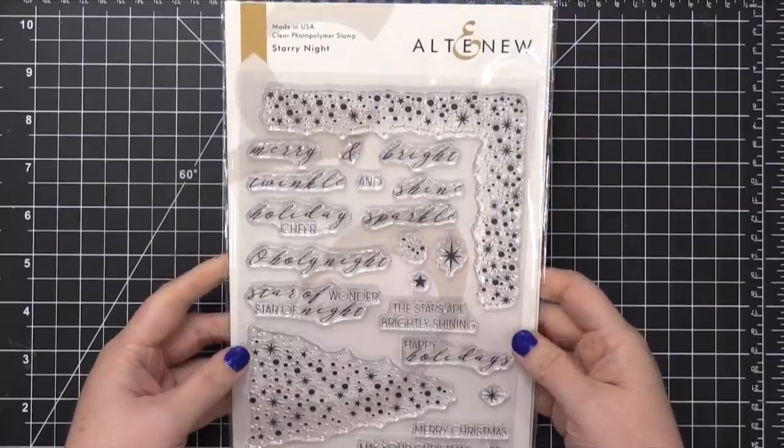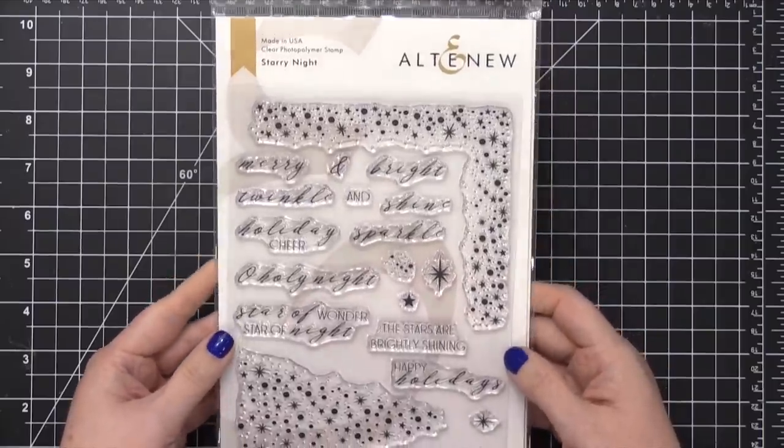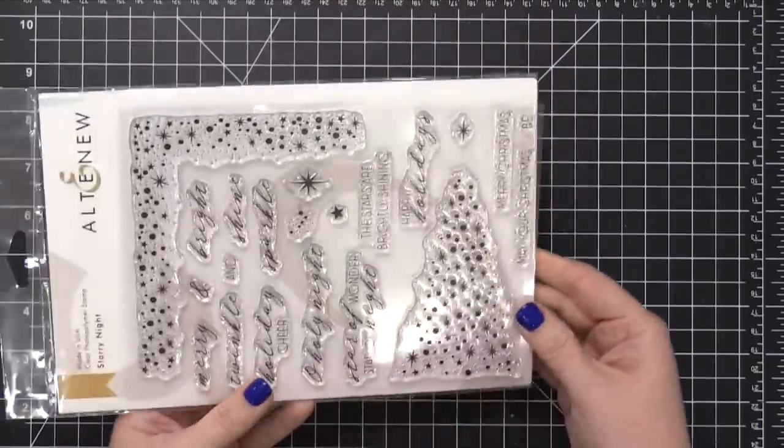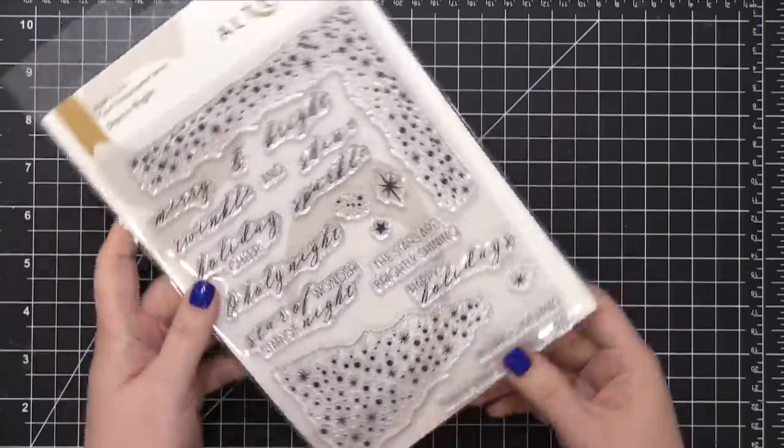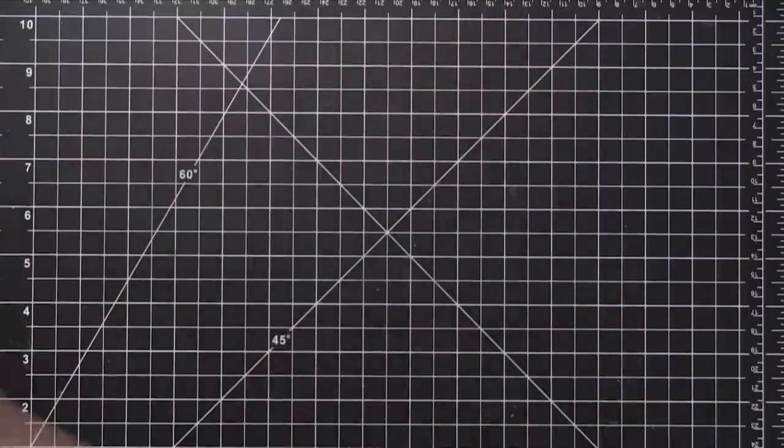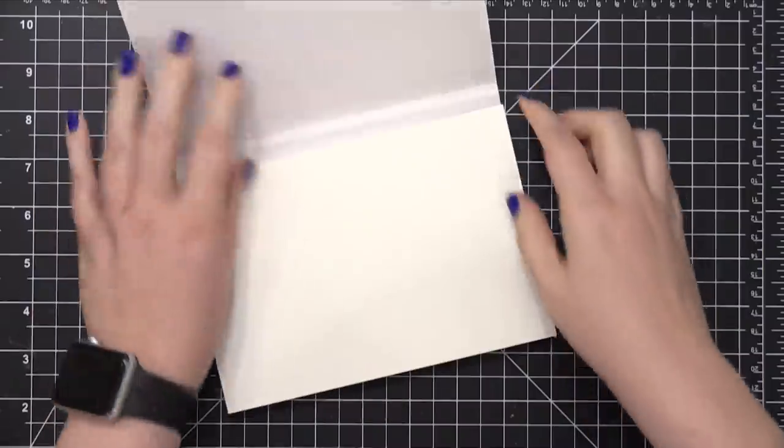The stamp set I'm using is called Starry Night from Altenew and it has some really great star clustered images. One that's in the shape of a tree and another that's kind of got a corner element to it if you want to use that one.